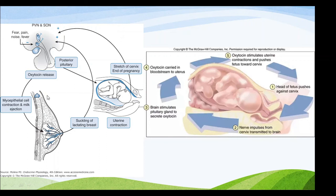In this figure, you can see the regulation of oxytocin release. The posterior pituitary releases oxytocin. Fever, pain, and noise produce a negative effect so that oxytocin is not released. When oxytocin is released, it activates myoepithelial cell contraction and milk ejection from the breast. Suckling of the lactating breast by the child produces a positive feedback effect on the release of more oxytocin.